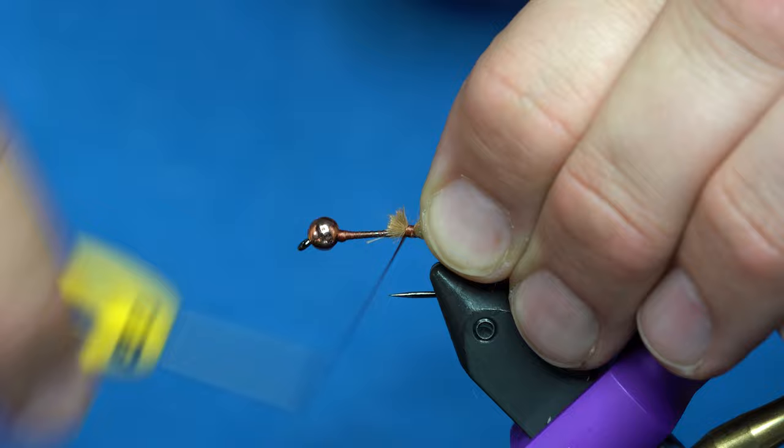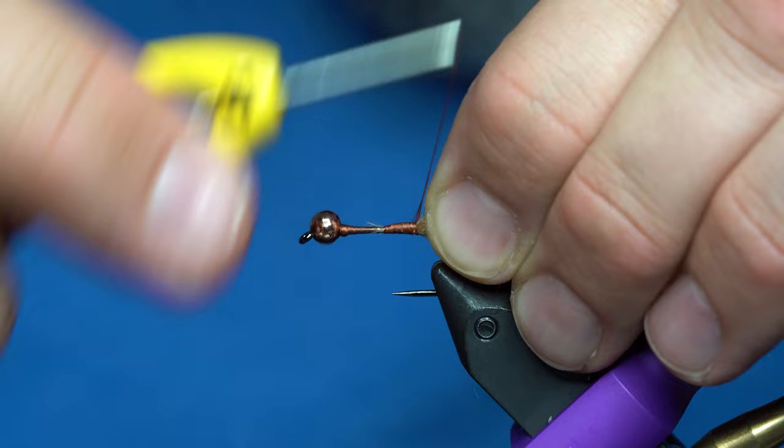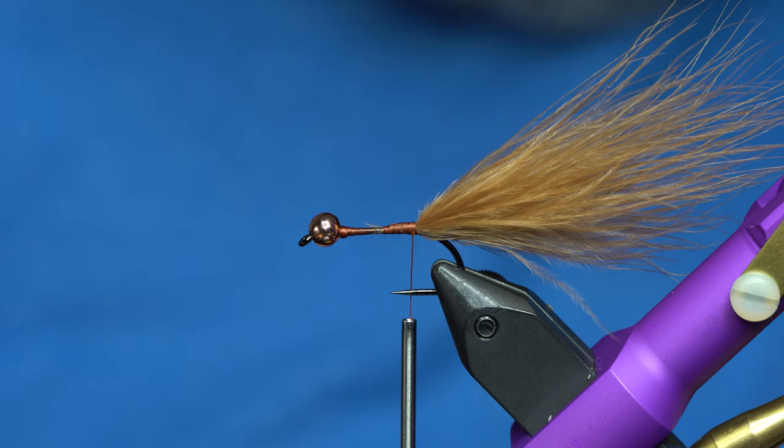If you tie your bugger tail in all the way back here, it's going to have a very minimal tie-in point. So, you don't have a crazy-looking bulky body. That's about the tail length that I'm looking for.